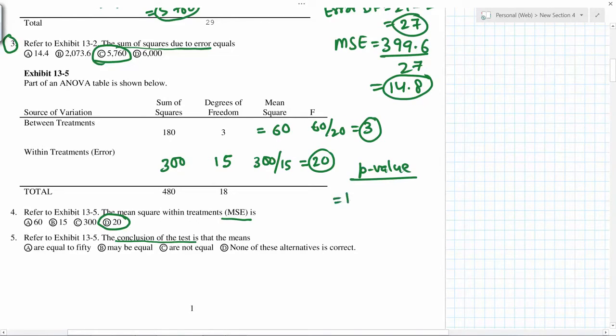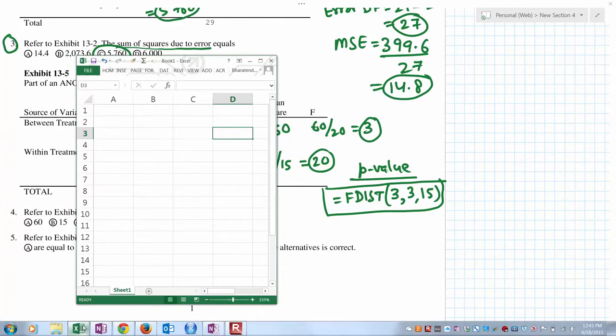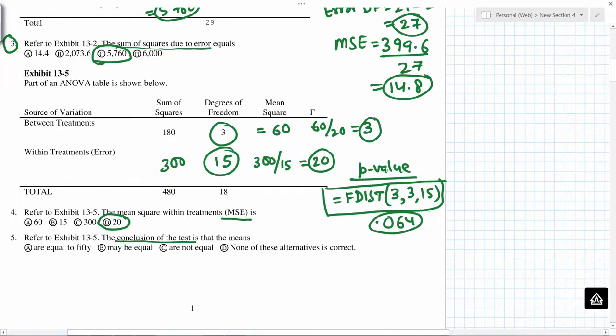Now to find p-value, you can use equals F DIST, F distribution with 3 and then these two degrees of freedom. 0.064, so p-value, if you look at the confidence level, this will be equal to 1 minus 0.064, so your confidence level is less than 94%.